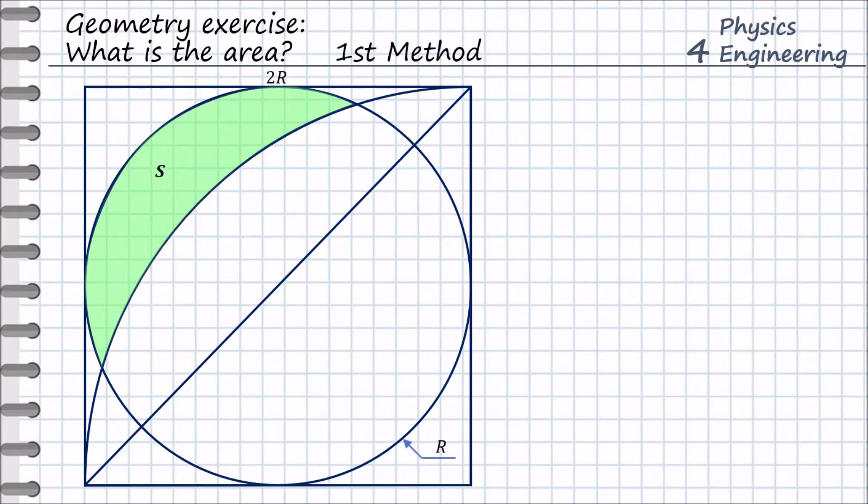Let us define the length of the square as 2r. Then r is the radius of this inscribed circle, and s is the area of the green shape.